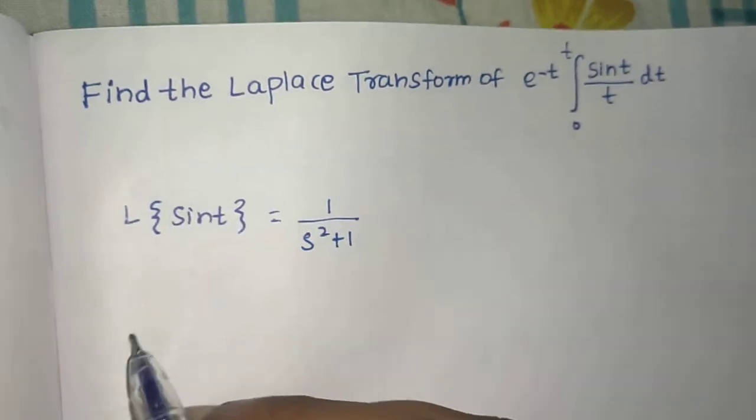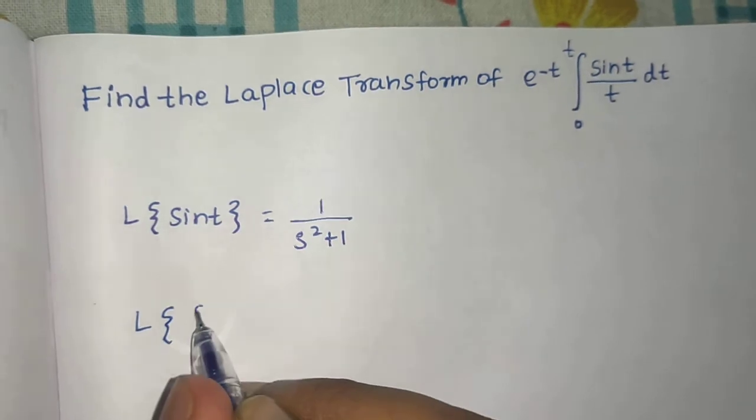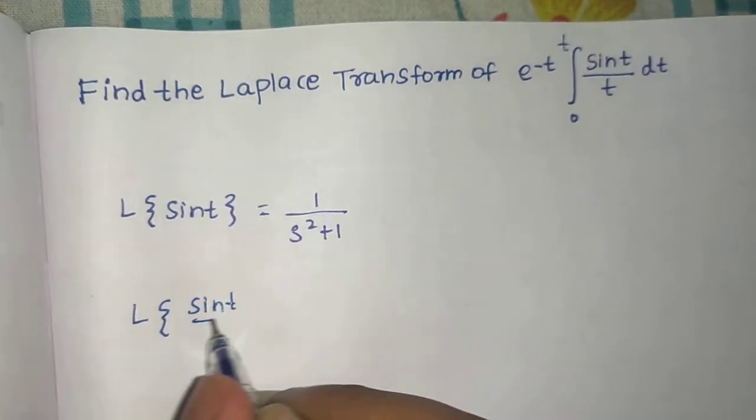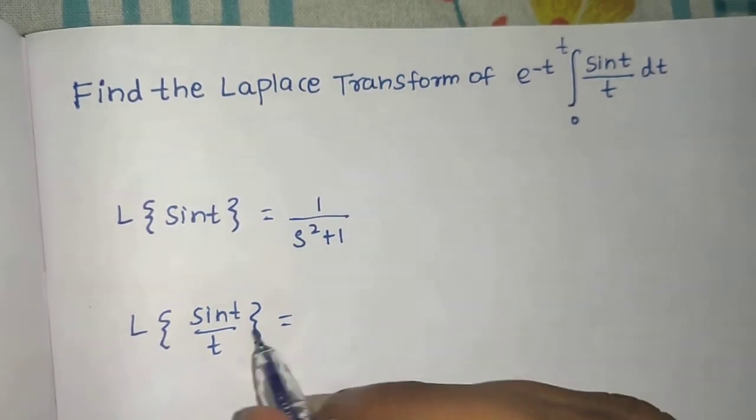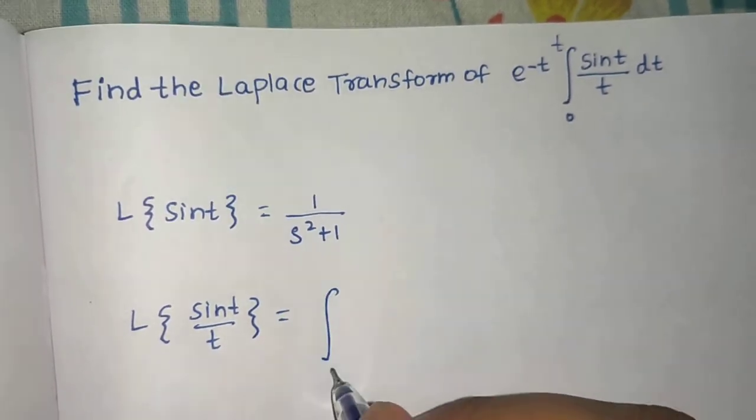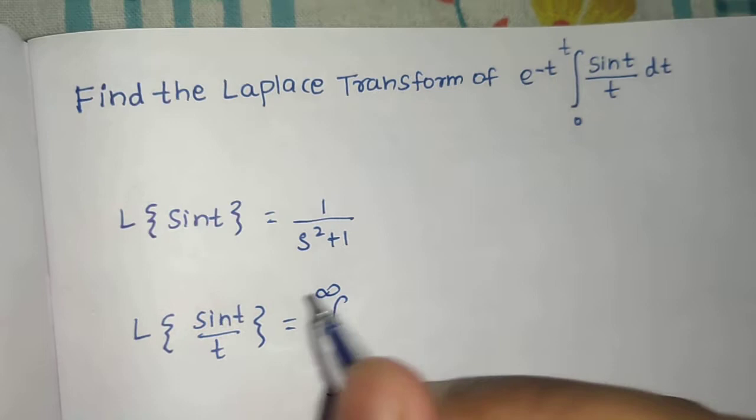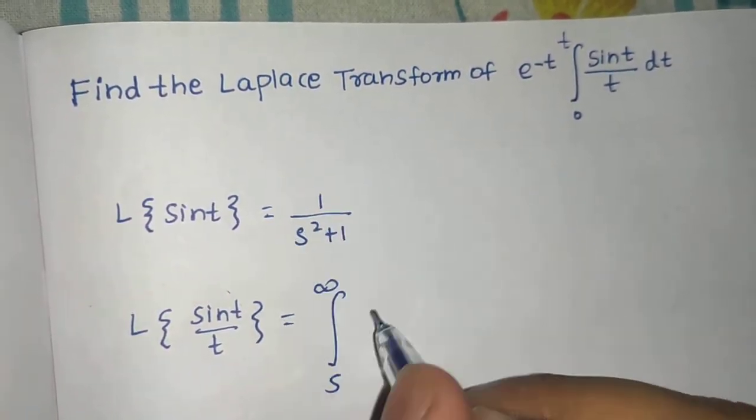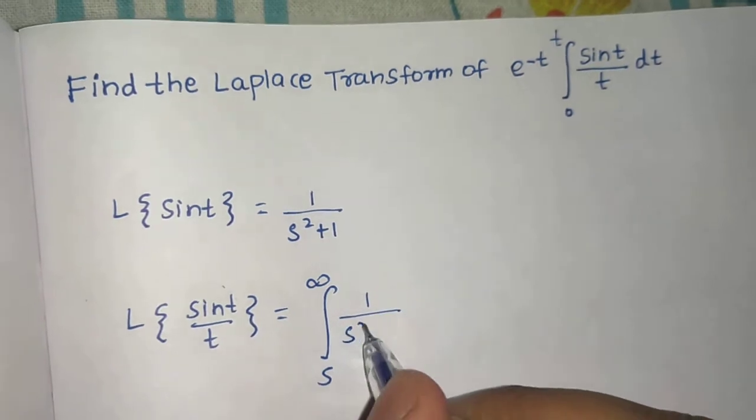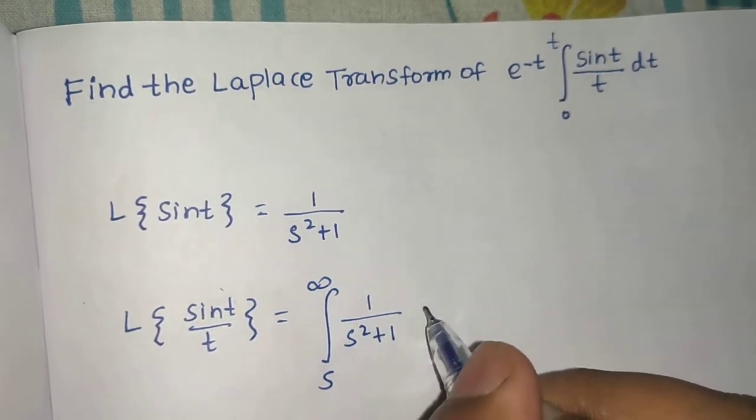Now division by t property. So Laplace of (sin t)/t. We know that if we divide by t, we integrate from s to infinity of whatever is the Laplace transform of the numerator.